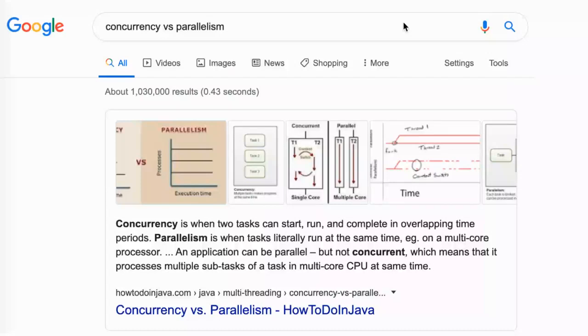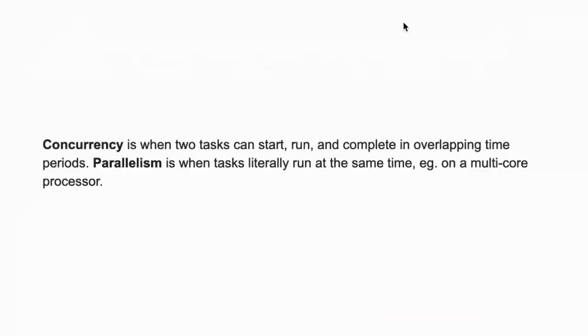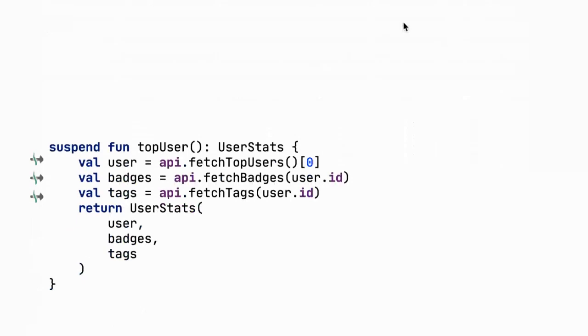Let's talk about concurrency versus parallelism — two concepts from concurrent programming. Concurrency is when two tasks can start, run, and complete in overlapping time periods. Parallelism is when tasks literally run at the same time, for example on a multi-core processor. In our method there's probably concurrency between this method and the one that updates the UI, but internally everything is sequential.